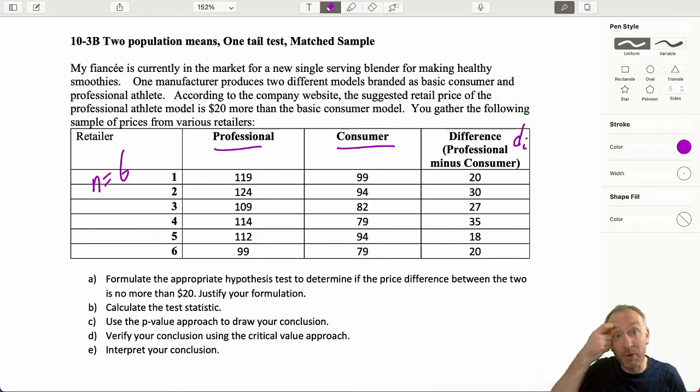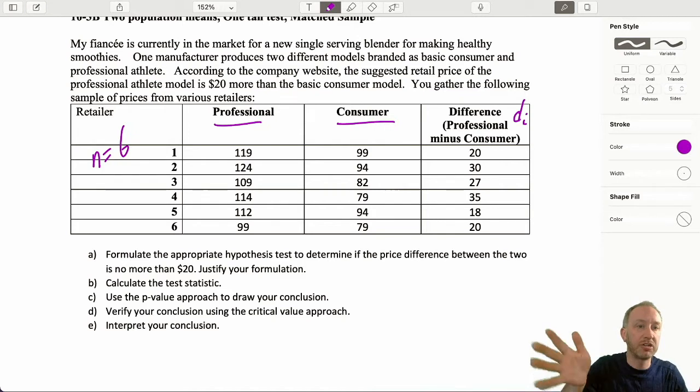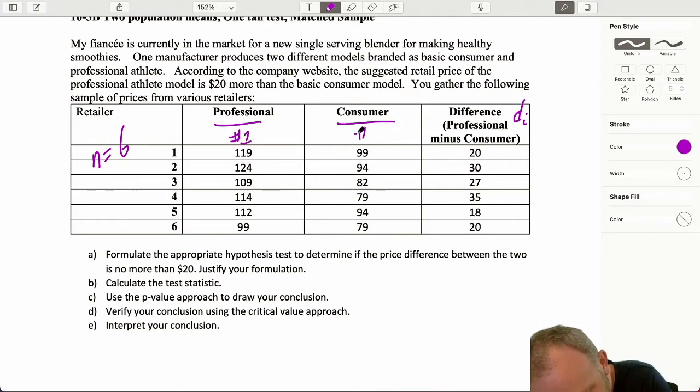These data points, these difference values, have been calculated as the professional minus the consumer. That implies that this is my population 1 and this is population 2, because it's always population 1 minus 2. And those are my difference values.